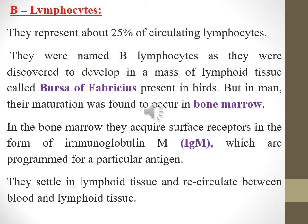B lymphocytes represent about 25 percent of circulating lymphocytes. They were named B lymphocytes as they were discovered to develop in a mass of lymphoid tissue called Bursa of Fabricius present in birds. But in humans, their maturation was found to occur in bone marrow, where they acquire surface receptors in the form of immunoglobulin M, which are programmed for a particular antigen. They settle in lymphoid tissue and recirculate between blood and lymphoid tissue.